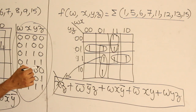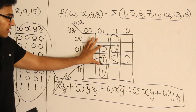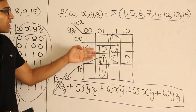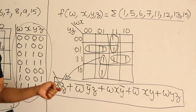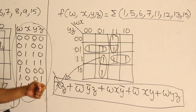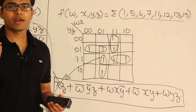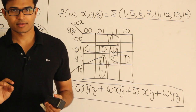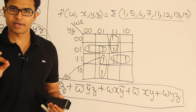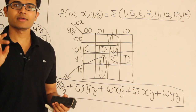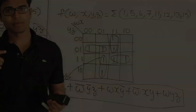XZ is not required because whatever cells are covered by XZ are already covered by the other subcubes. To understand this thoroughly, we need to understand the concepts of implicant, prime implicant, required implicant, and essential prime implicant.